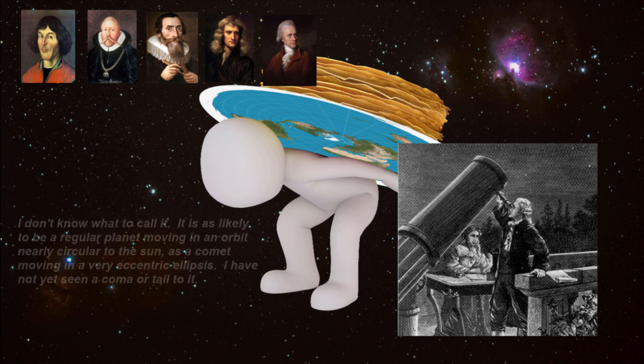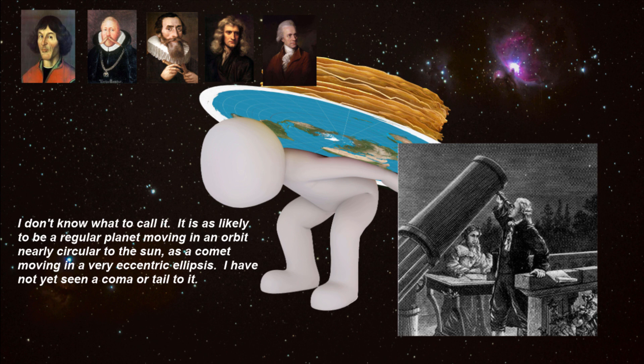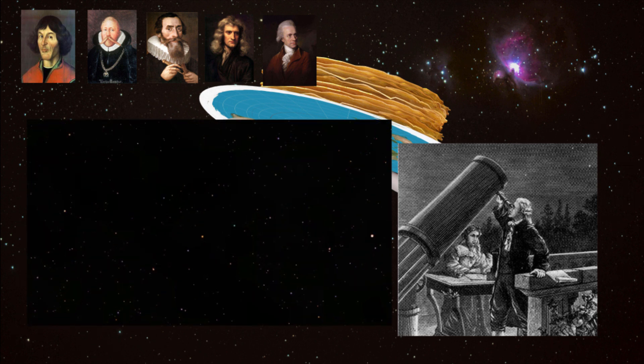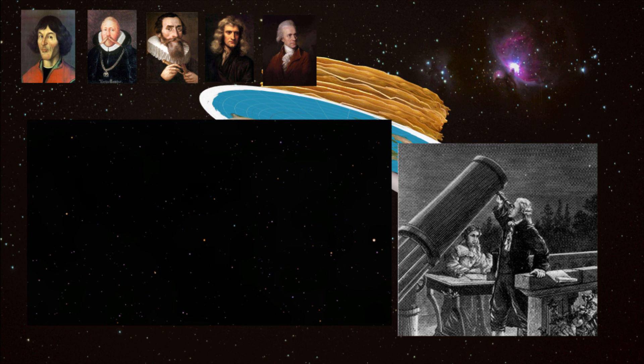Stating, I don't know what to call it. It is as likely to be a regular planet moving in an orbit nearly circular to the Sun as a comet moving in a very eccentric ellipse. I have not yet seen a coma or tail to it. Follow-on observations by other astronomers determined this was not a comet, but rather a newly discovered planet, Uranus.